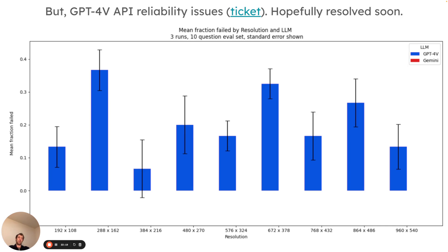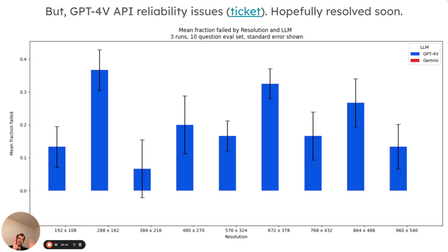There's an odd result I want to flag. I've noticed that GPT-4V has some reliability issues — 400 errors. I linked the ticket above and hope it's resolved soon. It didn't seem correlated to resolution; it seems more or less random. I think it also skewed prior results because the scoring may have been affected by trials erroring out and failing to produce a correct or incorrect score, injecting noise in the results. If you're thinking about using this in production, hopefully it's fixed soon — this may be a temporary issue.